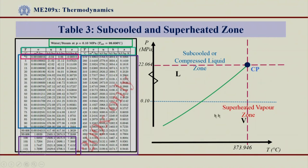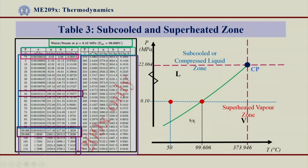The entire second part is in the superheated vapour zone. For example, at 50 degrees centigrade — which lies in the sub-cooled or compressed liquid zone — that point would be on the left side of the LV line. Corresponding to 50 degrees centigrade and 0.1 MPa, I get all the property data: V, U, H, and S for this single-phase sub-cooled compressed liquid zone. Going on increasing the temperature, I will ultimately hit the phase change region — the LV line — where phase change is encountered. At 99.606 degrees centigrade I get the saturated fluid values.